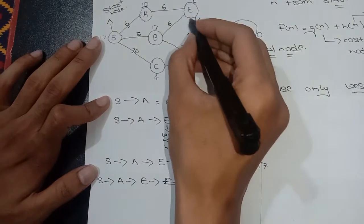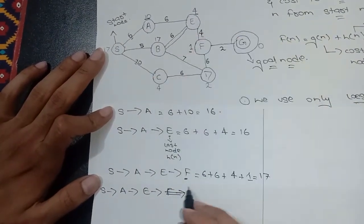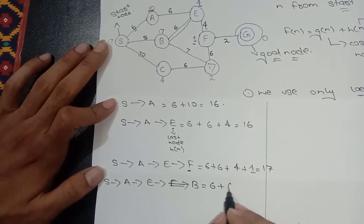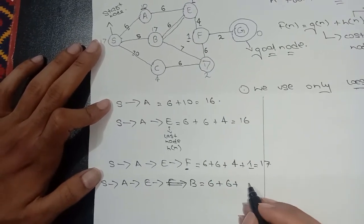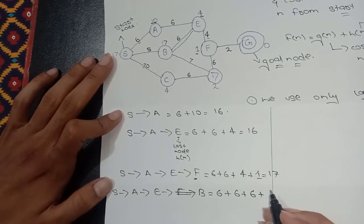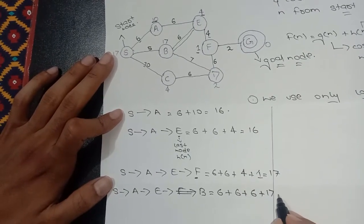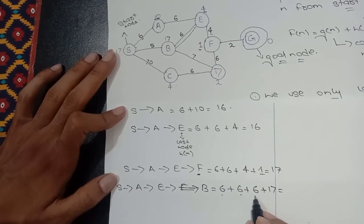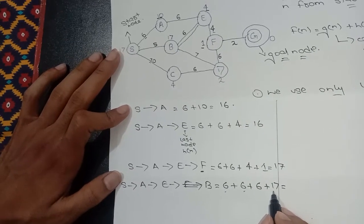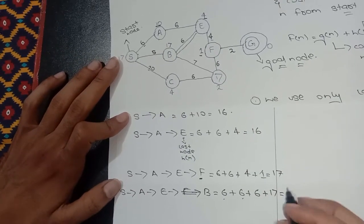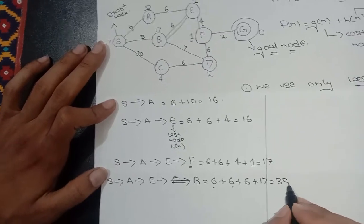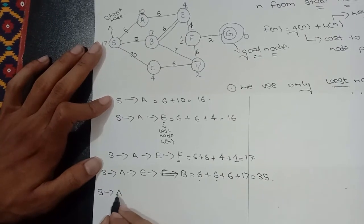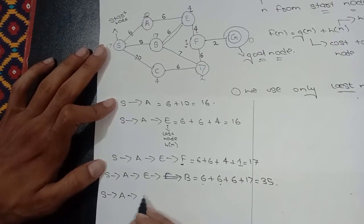Wait — I first traverse to B because B is also connected, just like F. So I will see what the value is: 6 plus 6 plus B's heuristic value is 17. So it will be 6 plus 6 equals 12, and 12 plus 6 equals 18, and 18 plus 17 becomes 35.